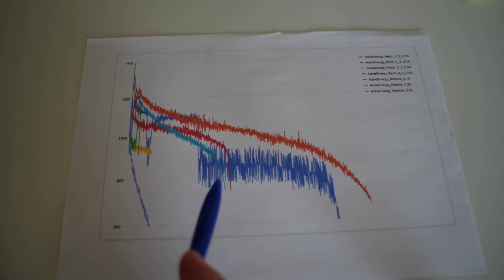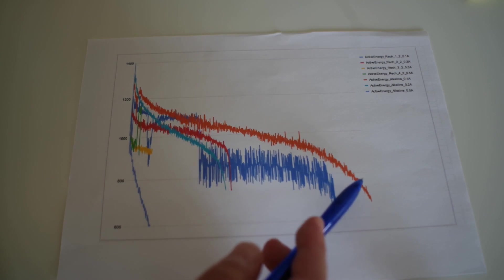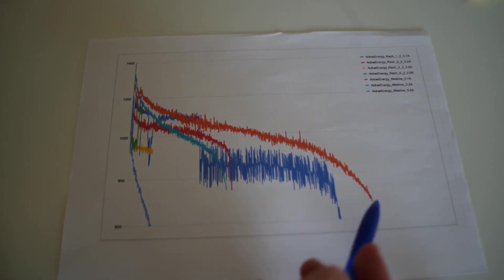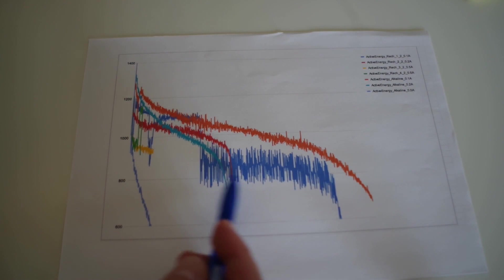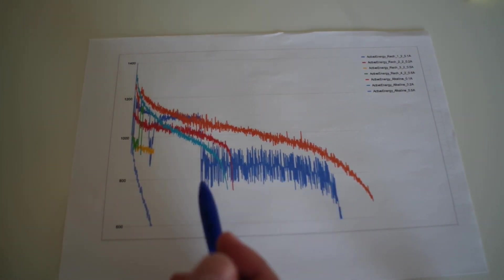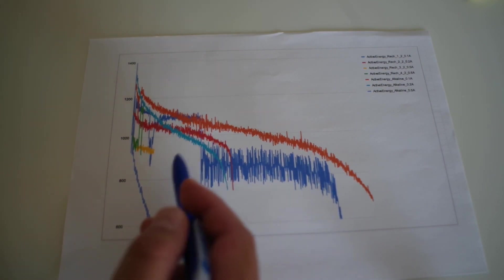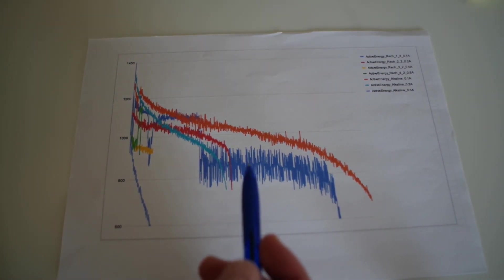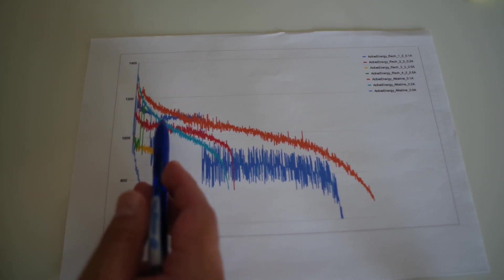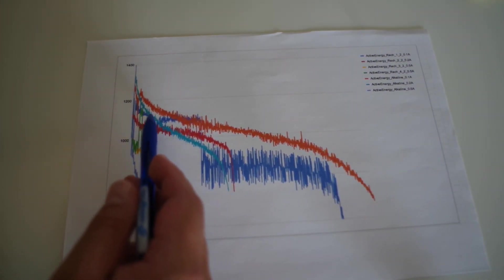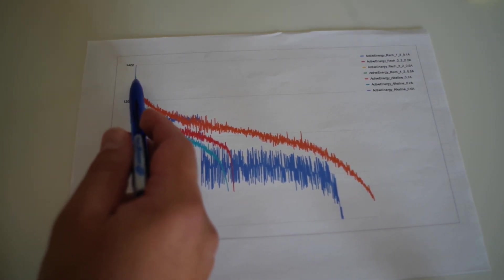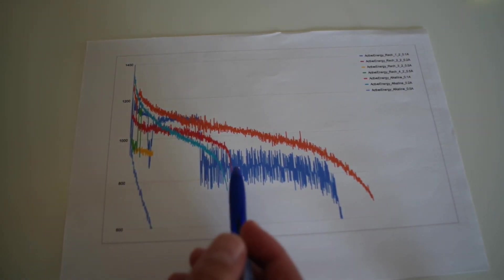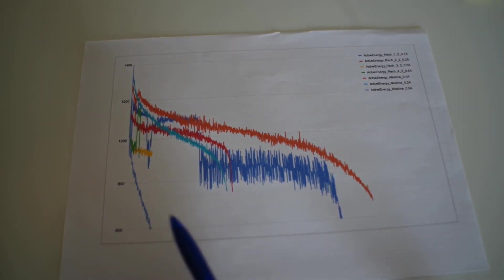For low current at 0.1 amp, this alkaline works a bit longer than rechargeable. For rechargeable you can see noise here because of bad contacts, but we can still compare it and alkaline performs better. But if you increase current to 0.2 amp, this is alkaline starting from relatively high voltage, and this is rechargeable. At 0.2 amps rechargeable already performs better.